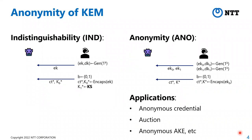The standard security notion for PKE and KEM is indistinguishability against chosen-ciphertext attacks, IND-CCA. All NIST PQC round-three KEMs achieve IND security in the random oracle model and the classical random oracle model. Roughly speaking, IND security implies that we cannot distinguish a ciphertext with a real key from one with a random key — where K_real is the real key and K_1 is a random key in the KEM context.